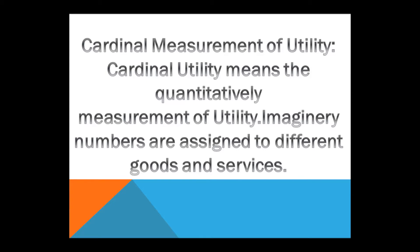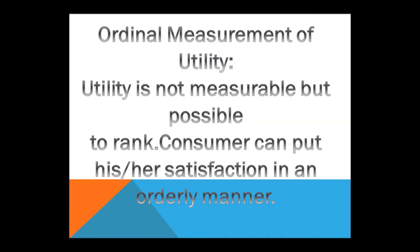Cardinal utility means the quantitative measurement of utility — it is about measuring utility in quantity, in numbers. Imaginary numbers are assigned to different goods and services. For example, Good A could provide utility of 10 utils, and Good B could provide utility of 8 utils.